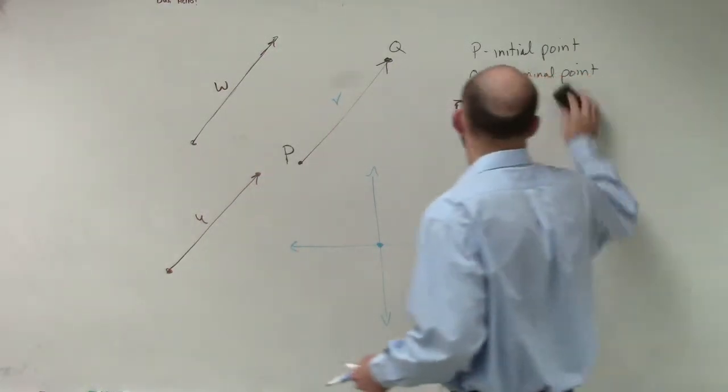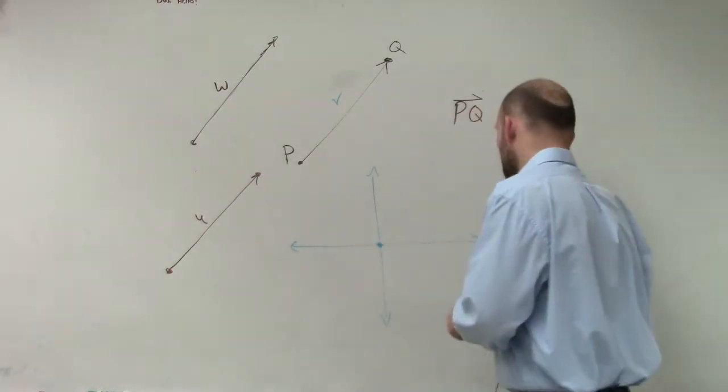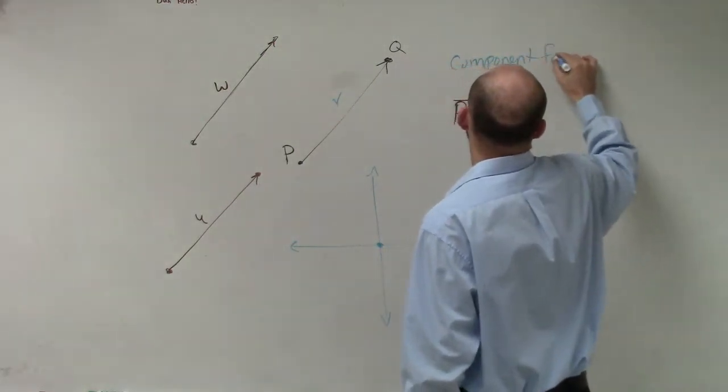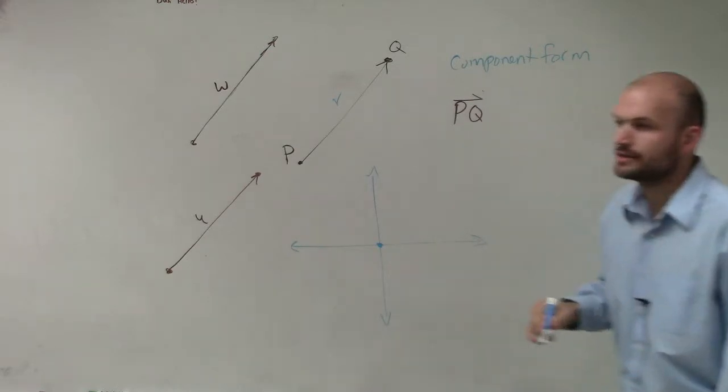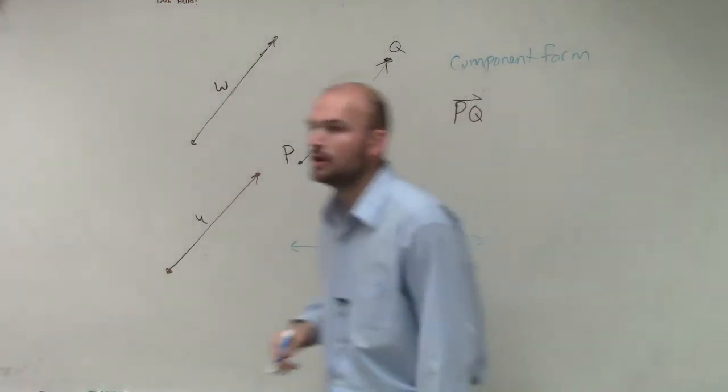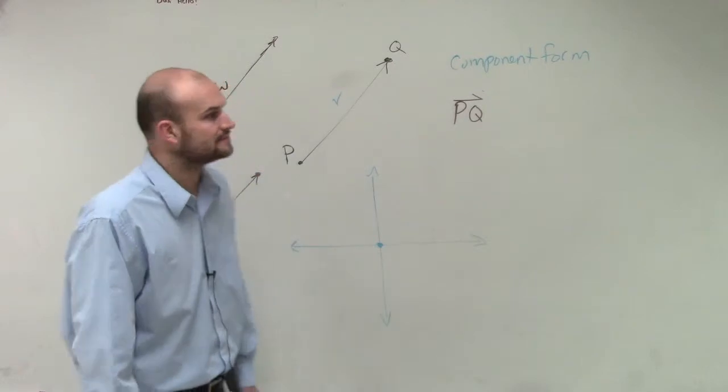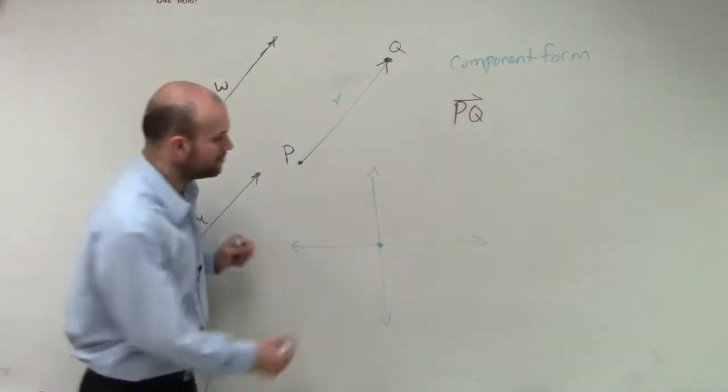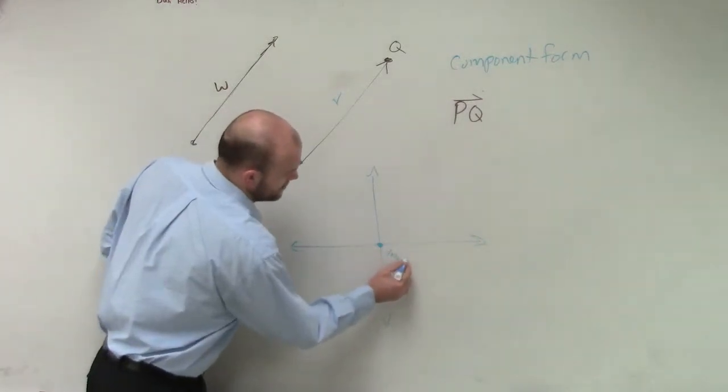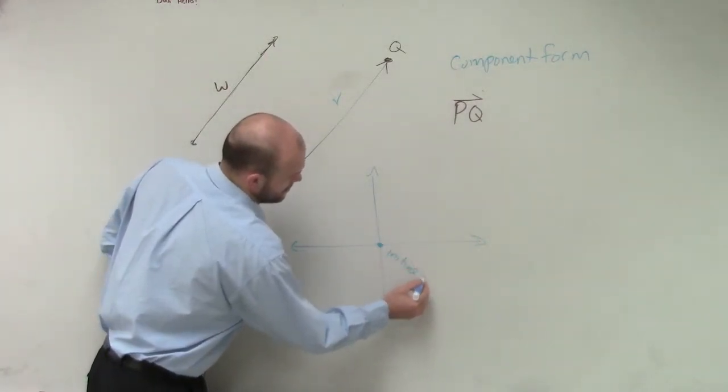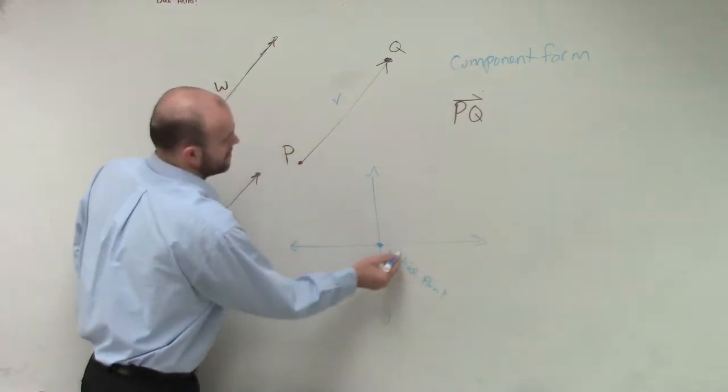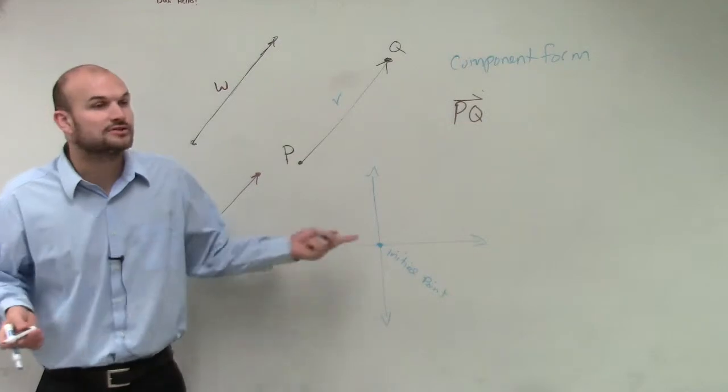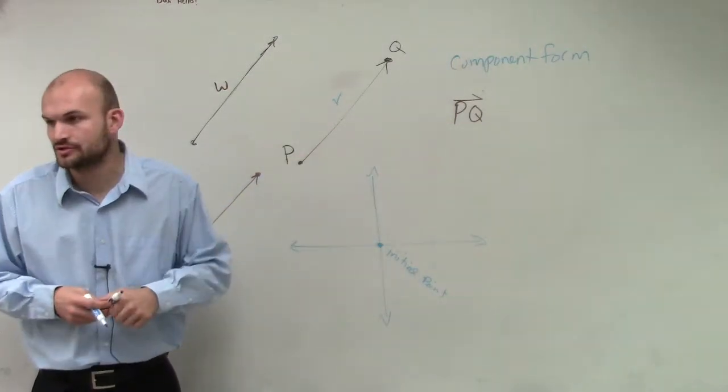So component form, you guys are going to want to have this down. So when you have a component form of your vector, what you're going to do is you're going to have your component form of a vector is going to have your initial point at 0, 0. Then your terminal point is going to be obviously wherever else you're going to choose.